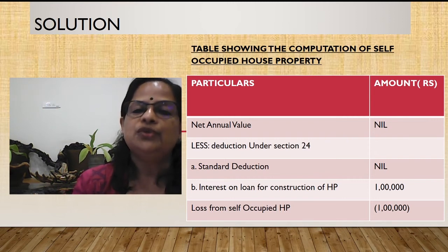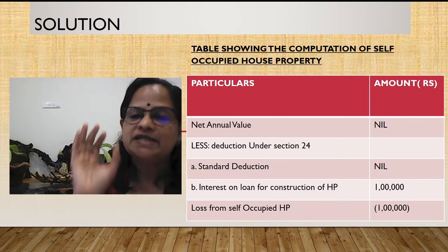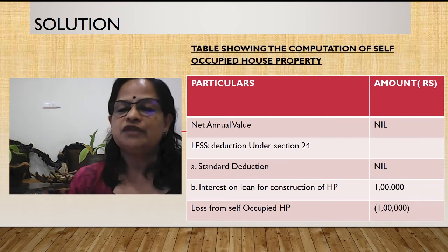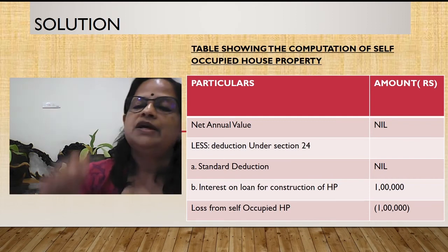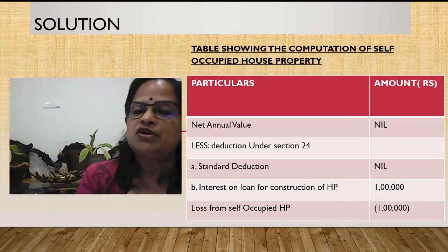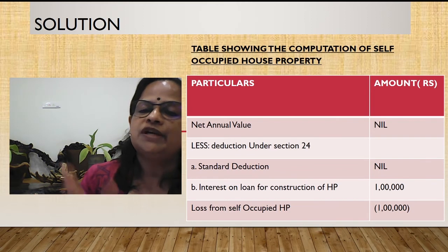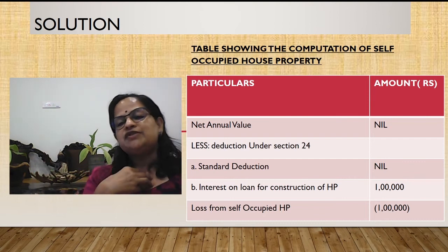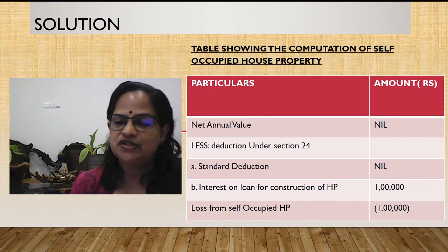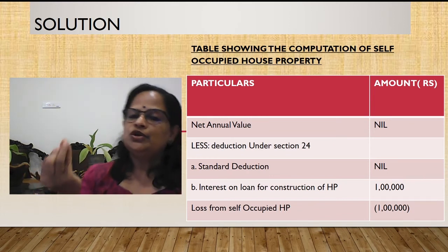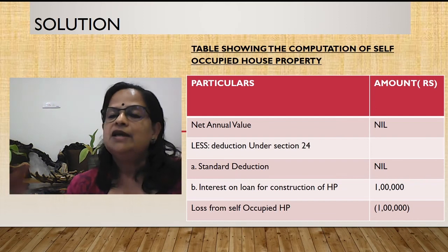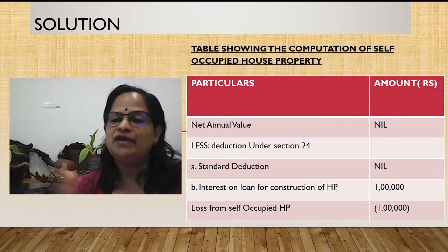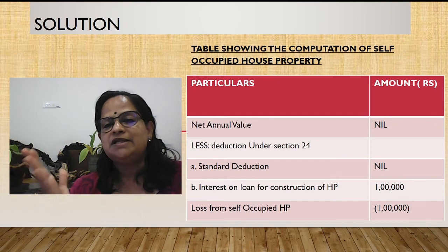This computation is different from let out house property — net annual value will be nil. Municipal taxes and other expenses will appear in the question just to confuse students, but we do not allow them. Standard deduction of 30% is not allowed here; it is only for let out house property. Only interest on loan taken for construction is allowed, and that comes as a loss. For salaried or business people, this loss can be adjusted. If salary is 20,00,000, claiming 2,00,000 housing loan interest means only 18,00,000 is taxable — a good saving.